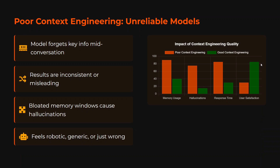Poor context engineering leads to unreliable models. The model forgets key information mid-conversation. For example, if you're doing iterative prompting and you've said 'don't use bullet points', after 10 prompts it might start using bullet points again. Results are inconsistent, there are bloated memory windows, hallucinations, and responses feel robotic. Looking at this graph: poor context engineering means more memory usage, more hallucinations, higher response time, and lower user satisfaction.